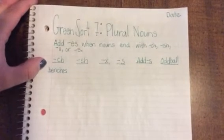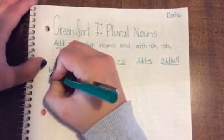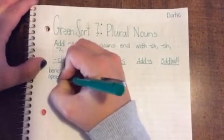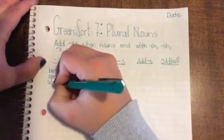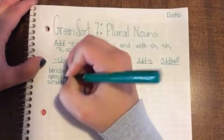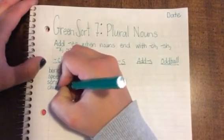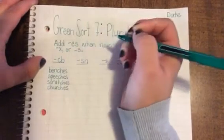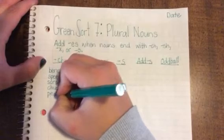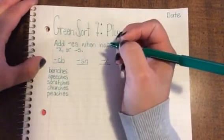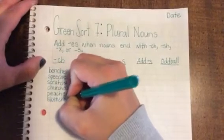The other words in this category are speeches, scratches, churches. So church becomes churches. Peach becomes peaches. Sketch becomes sketches.